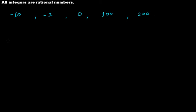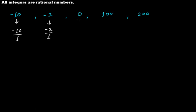Now this is minus 10. I can write this minus 10 as minus 10 divided by 1, because if you divide any number by 1 you will get back that number only. Similarly we can write minus 2 as minus 2 divided by 1, and 0 as 0 divided by 1.